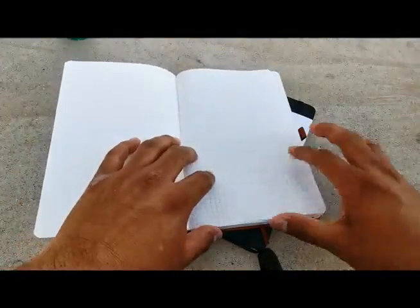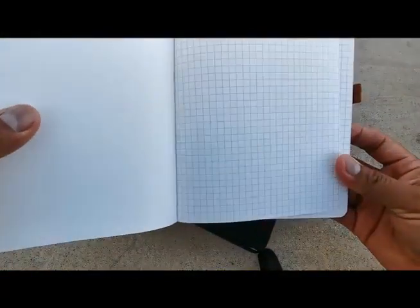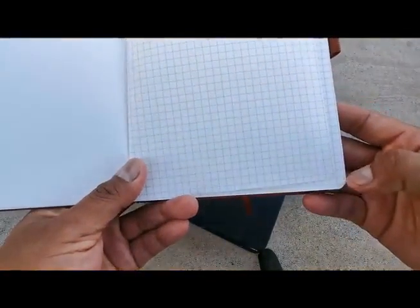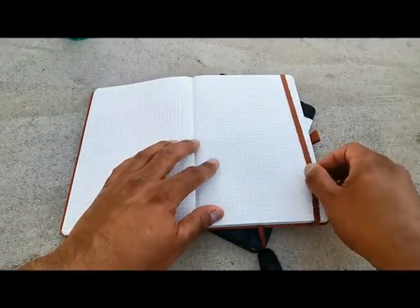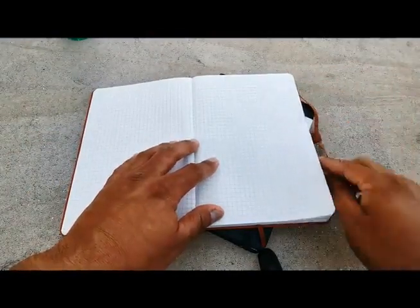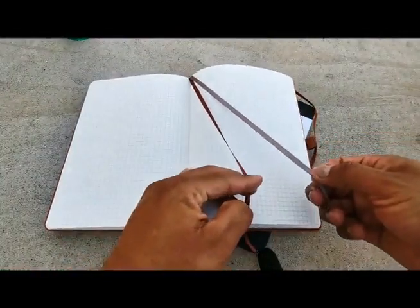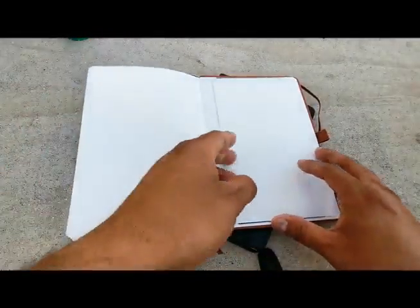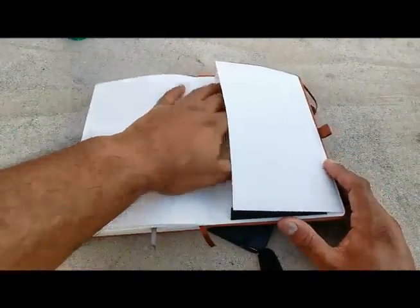Right away we start with a grid pattern, no number of pages, round corners, no perforations at least here. Here is the elastic band, two page markers and pocket in the back, and pen holder.